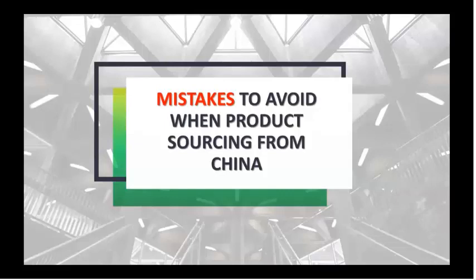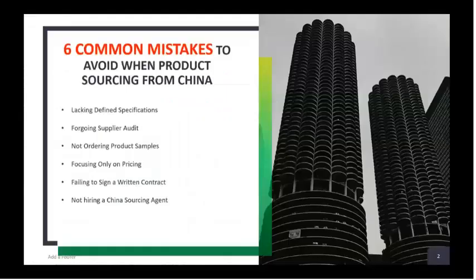When we are talking about sourcing, China has cheap cost but also cheap quality products, so here we have some barriers — not only language barriers or communication barriers, but also low quality products. Today we have to see which mistakes to avoid when going to product sourcing in China. There are six common mistakes, and the number one is lacking defined specifications.